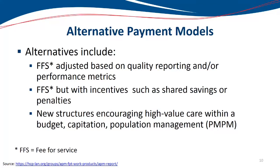A second alternative is a fee-for-service payment, but with incentives such as shared savings or some penalties. It's the same fee-for-service structure, but if providers are actually providing efficient care and they're able to bring the cost down, they get to share in the savings that were generated by bringing those costs down. It gets distributed as a bonus incentive. If they don't bring the costs down, then there are penalties involved.